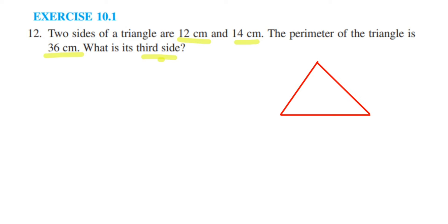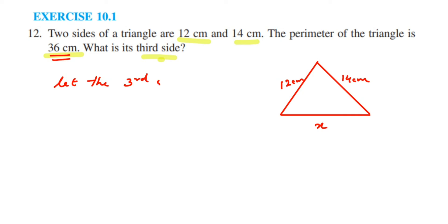I have taken a triangle and they have given two sides. Let me take one side as 12 centimeters and the next one as 14 centimeters. We have to find out the third side, which we don't know. So let me take the third side as x. Let the third side be equal to x.